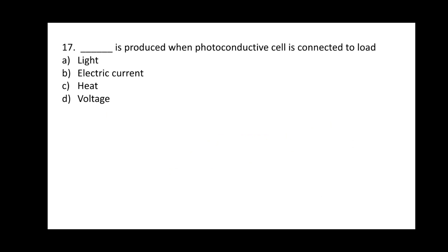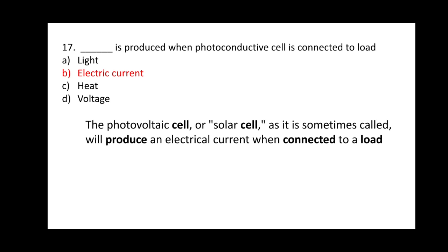Question 17: Dash dash is produced when a photo conductive cell is connected to a load. The correct option is B — electric current is produced when a photo conductive cell is connected to the load. The photoconductive cell, or solar cell as it is sometimes called, will produce an electrical current when connected to the load.